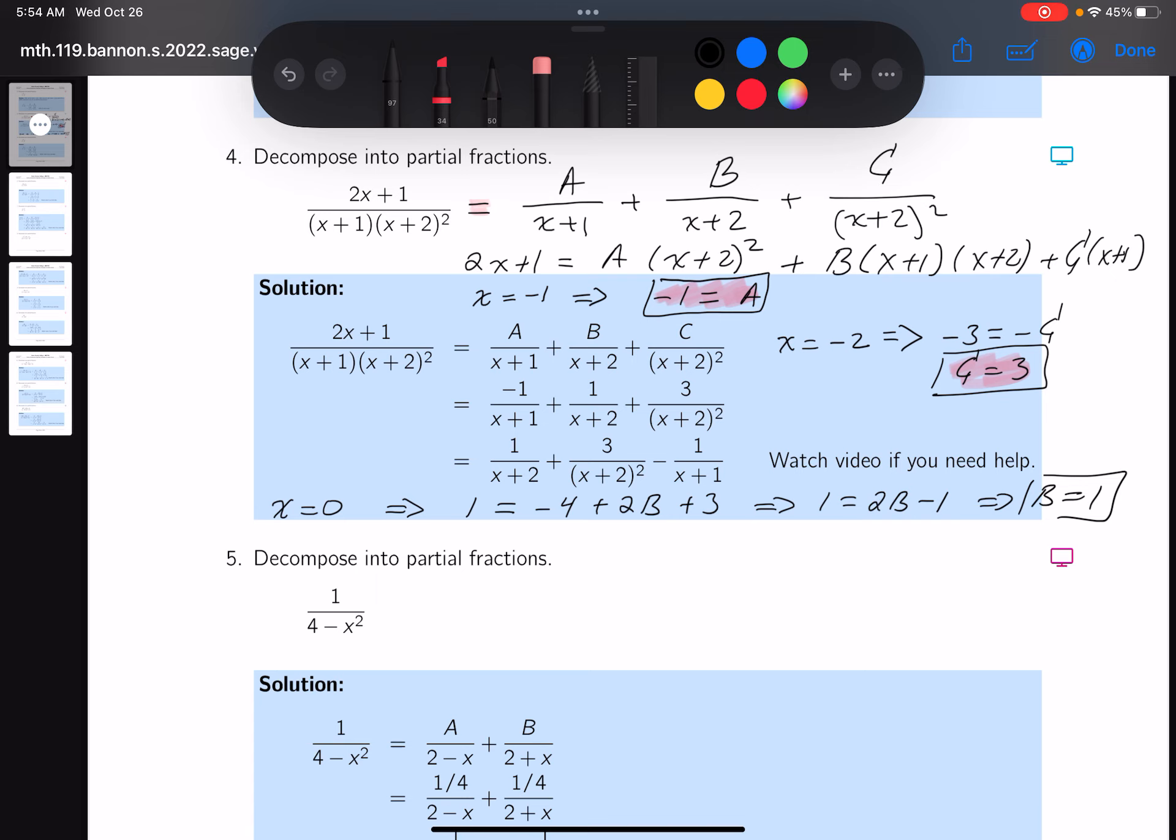So let's get the eraser out and start putting this down. What's the A? The A was minus 1, so I'll erase this and I'll put minus 1 here. What was the B? The B is 1, so I'll erase this and I'll put a 1 down. And what was the C? The C was 3.